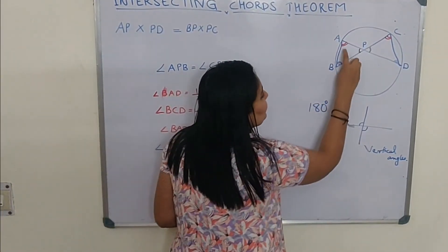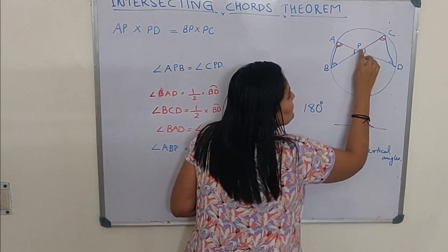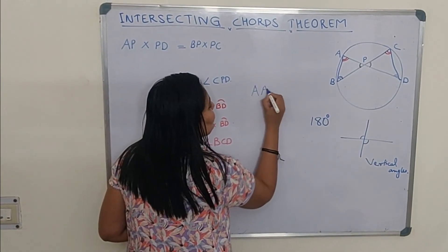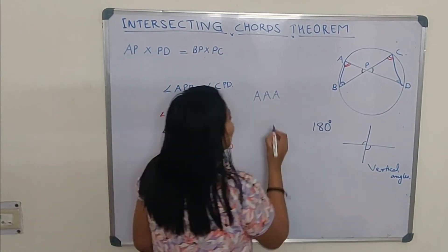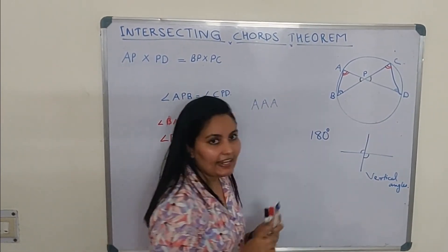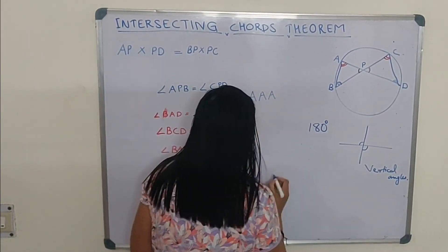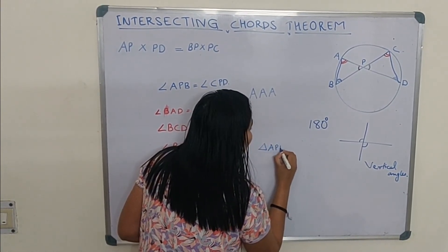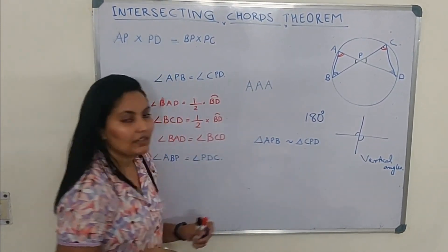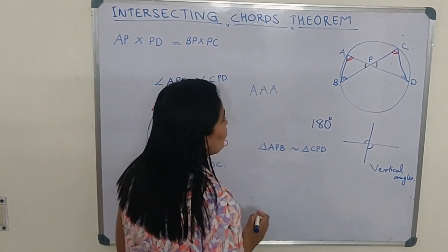Now we have established that all three angles of triangle APB equal the three angles of triangle CPD. According to the Angle-Angle-Angle (AAA) theorem — the three angles of one triangle equal the three angles of another triangle — we can say that these two triangles are similar. So triangle APB is similar to triangle CPD.